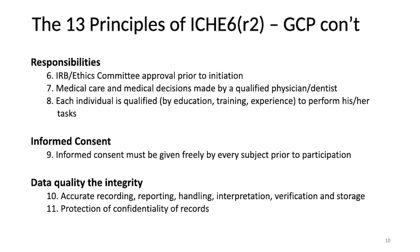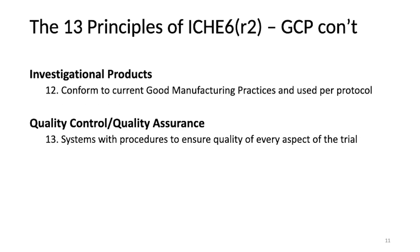You have informed consent, which must be provided to all subjects freely so they can make their own decision, with no coercion involved. You also have your data — ensuring it is accurately recorded, reported, and handled with verification and storage, and that there are special protections for the confidentiality of those records. In your research study, you will have investigational products, and you want to ensure they conform to the current good manufacturing practices used in your protocol. And finally, quality control and quality assurance — ensuring these are in place for all systems, including electronic systems as well as SOPs or manuals of operations.